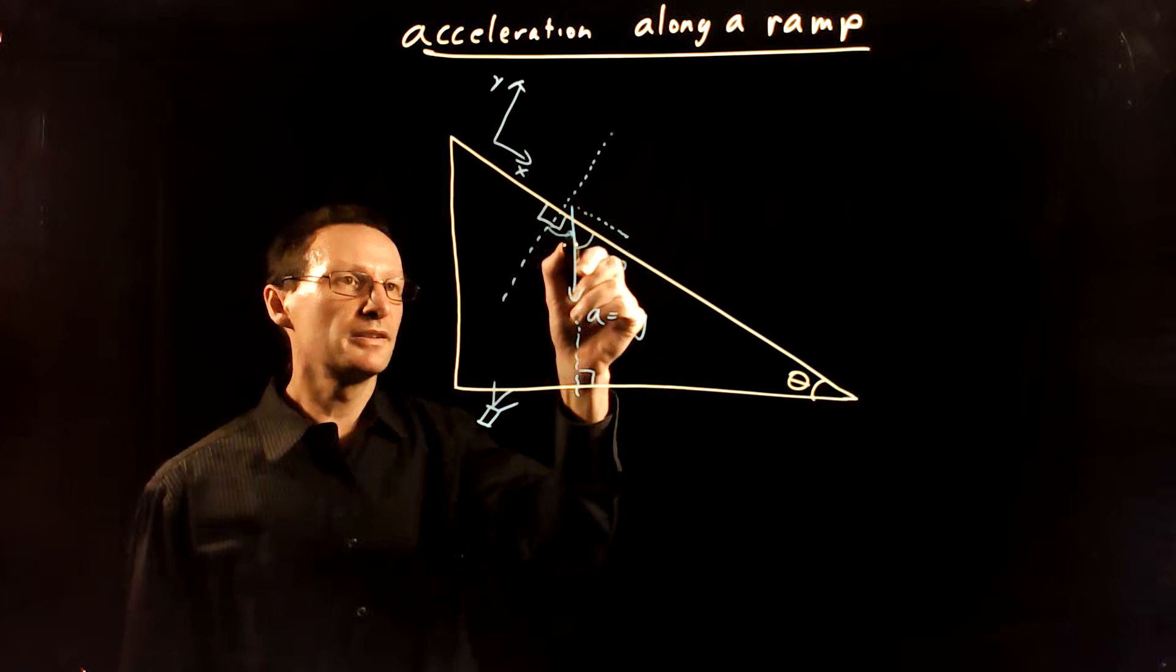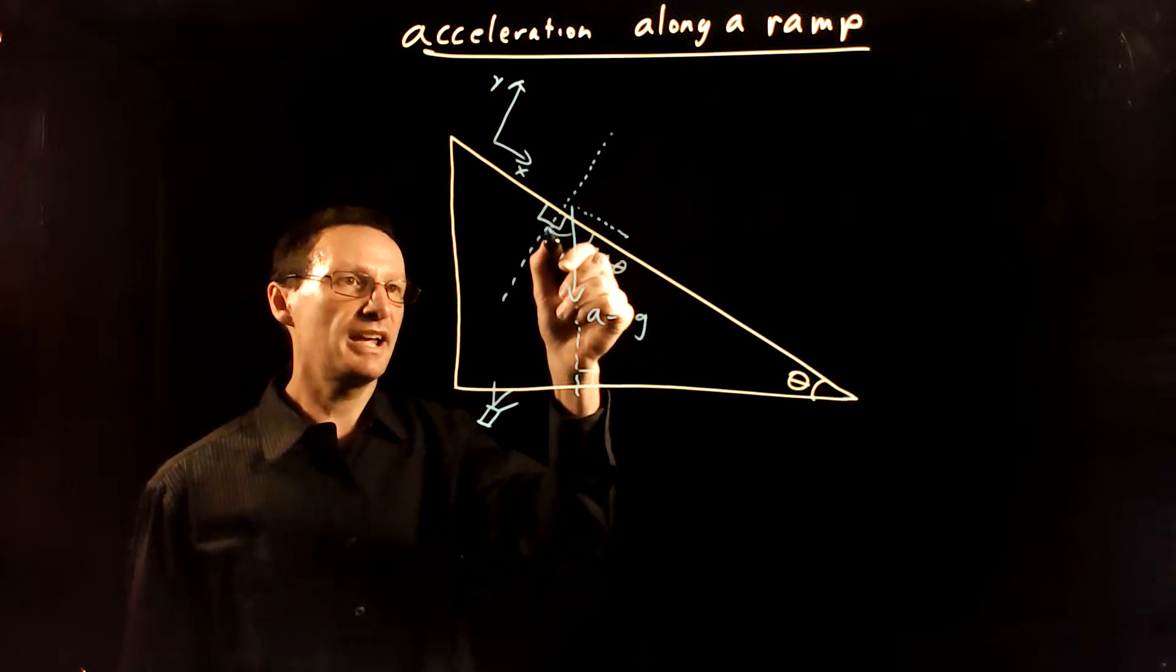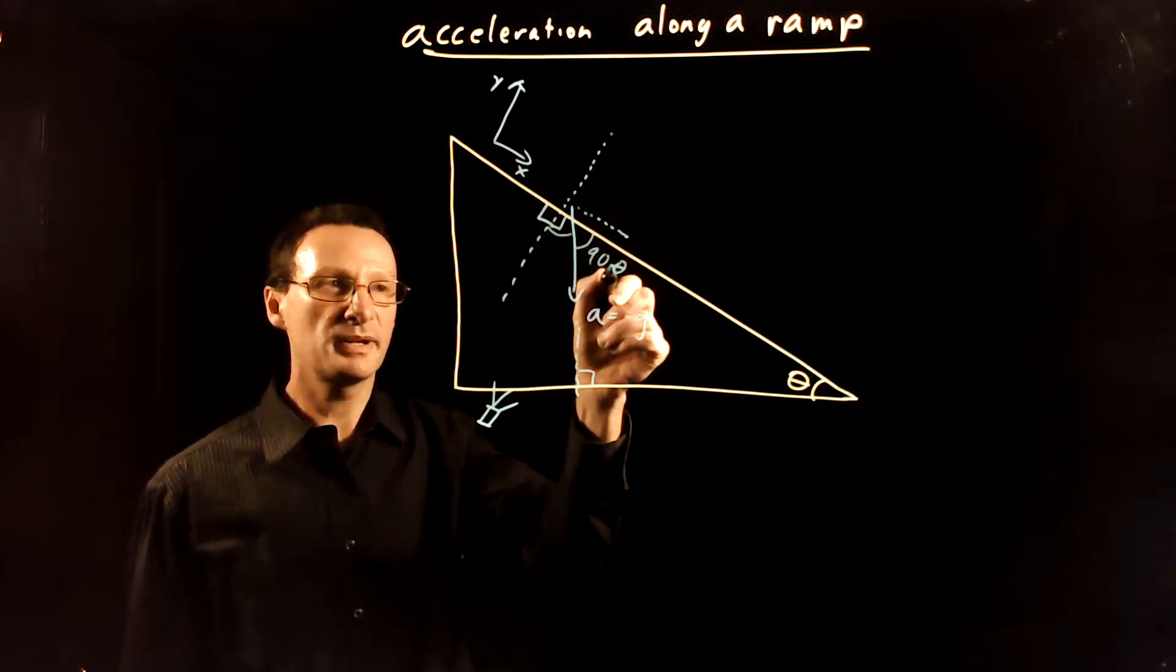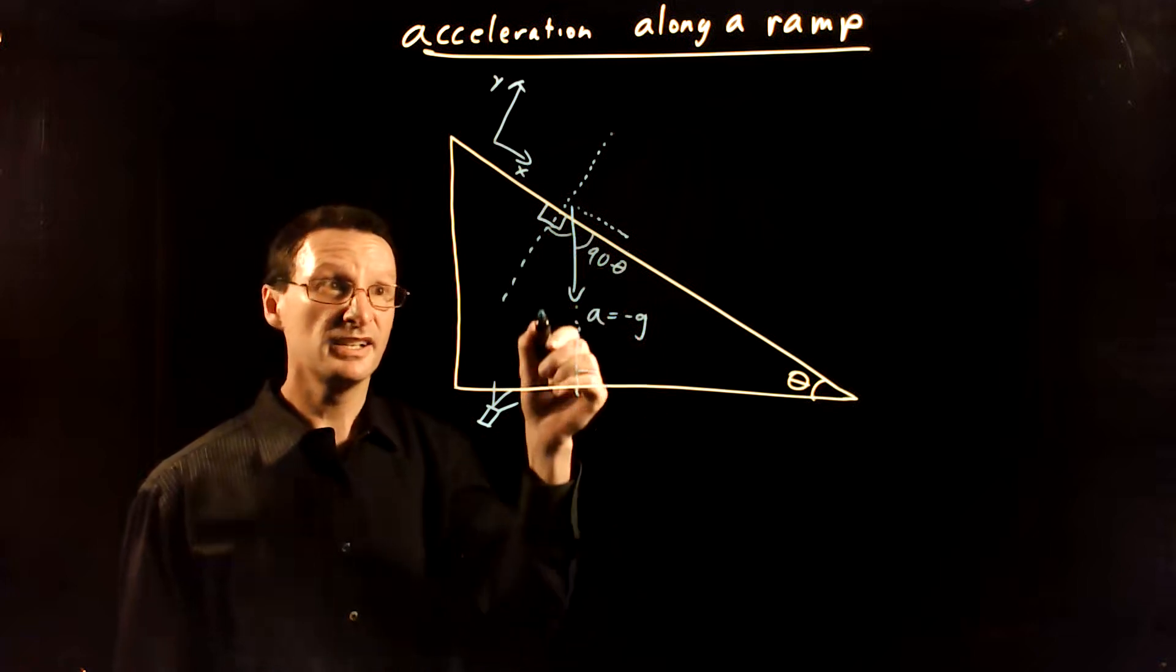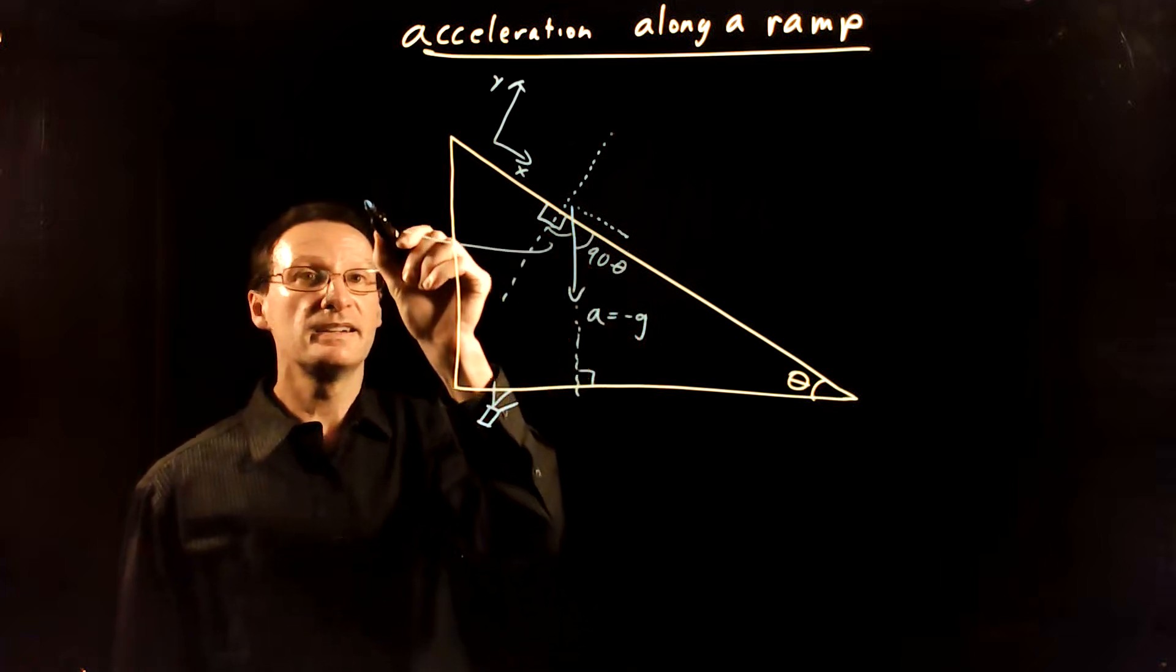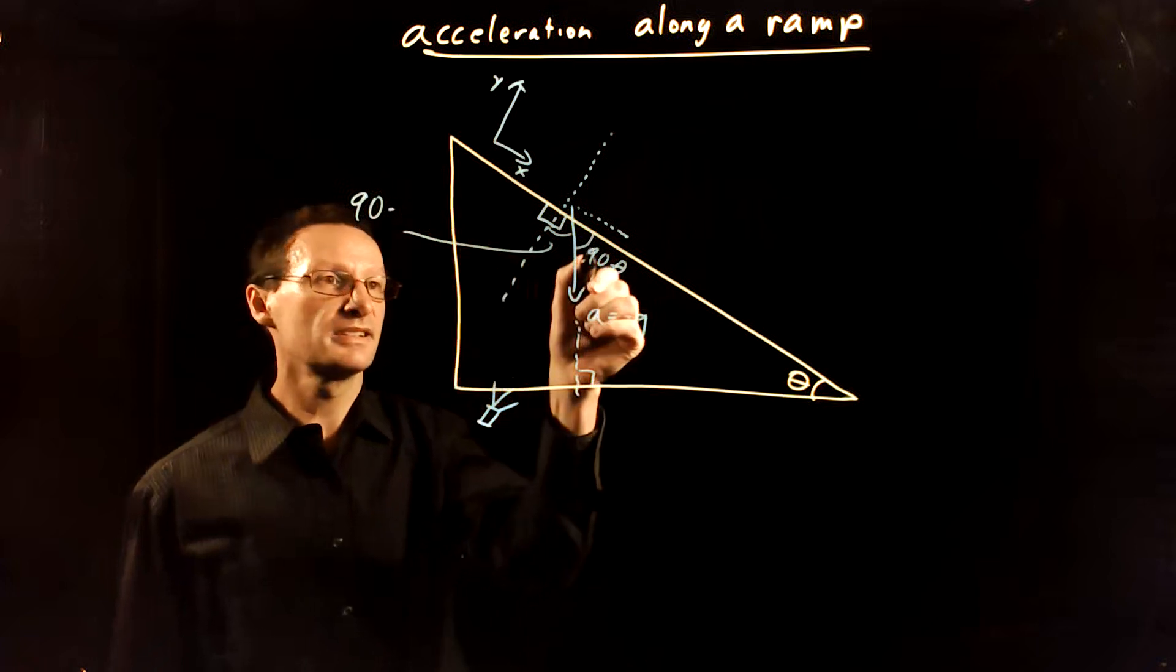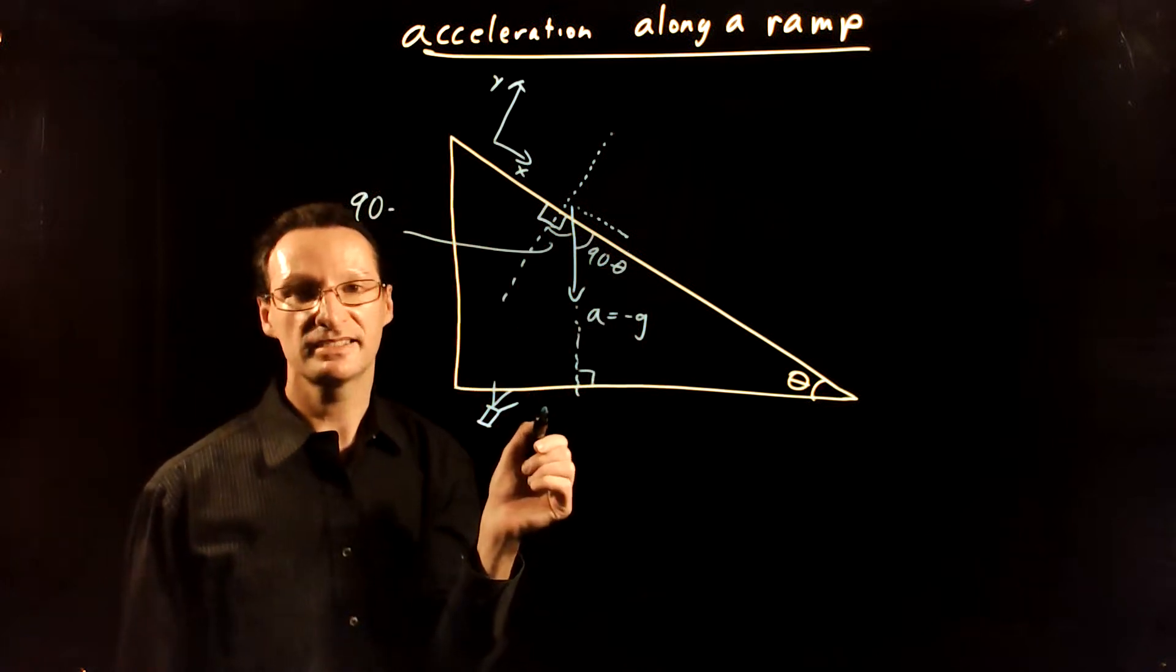This angle then must—of course that angle plus this angle 90 minus theta must total to 90, so this angle must be 90 minus this angle which is 90 minus theta.